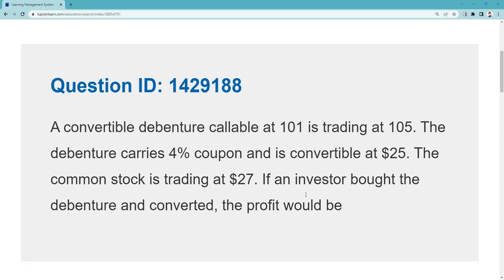Alright, let's get this question done — QID 142-9188. A convertible debenture callable at 101 is trading at 105, so that's 105% of par, which is $1,050. The debenture carries a 4% coupon and is convertible at 25. The minute I get the conversion price I need the conversion ratio, so I highly recommend getting in the habit — whenever you see a convertible question and you get the conversion price — to establish the conversion ratio. The common stock is trading at 27, and the investor bought the debenture and converted it for a profit.